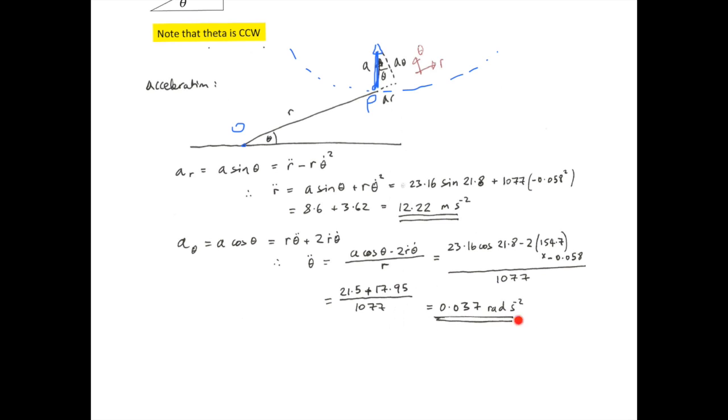This, then, gives the answer just above 0, 0.037 radians per second squared. And that's it.